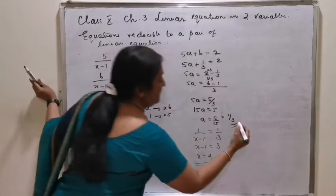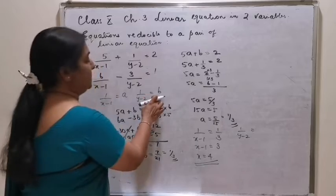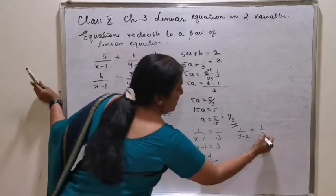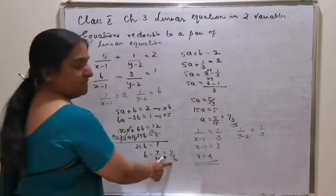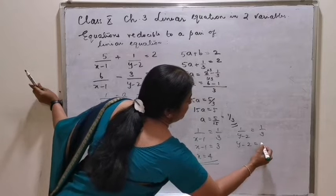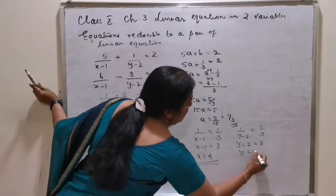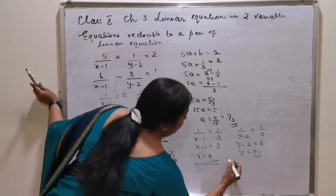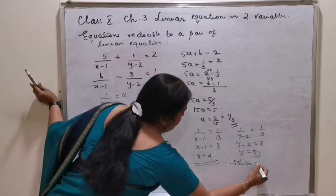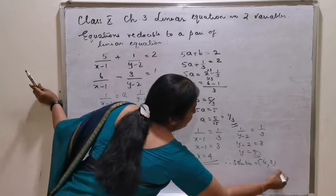1 by y minus 2 is equal to b. b value is also 1 by 3. Cross multiplying: y minus 2 is equal to 3, so y is equal to 5. Therefore, the solution of this equation is x equals 4, y equals 5.